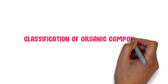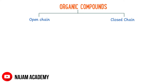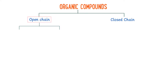Classification of Organic Compounds. Organic compounds are classified into two main categories: open-chain organic compounds and closed-chain organic compounds. Open-chain organic compounds are further divided into two main groups: straight-chain organic compounds and branched-chain organic compounds.